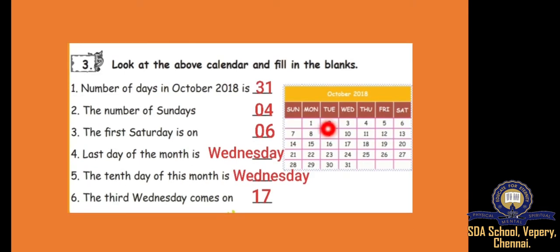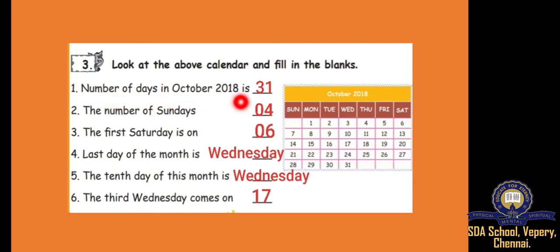There is one calendar, that is the October 2018 calendar, and they have asked a few questions. Looking into this calendar, we have to answer the blanks. First one: number of days in October 2018. How many days are there? 31. The last number is 31, so 31 days. Number of Sundays — see here.